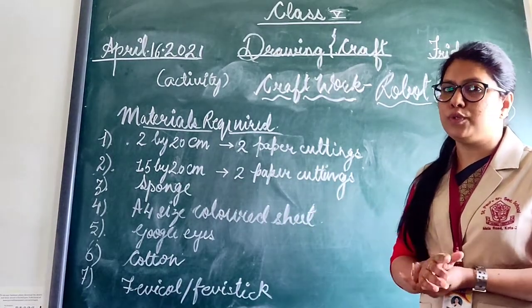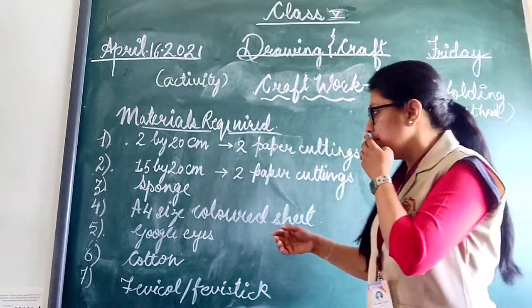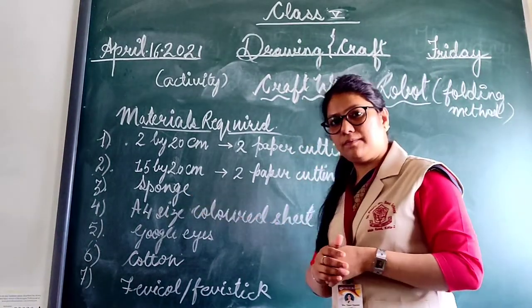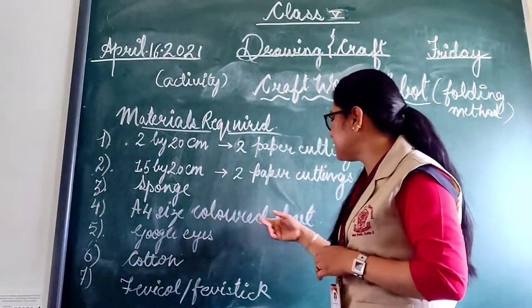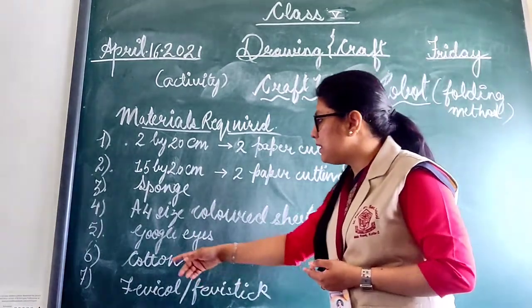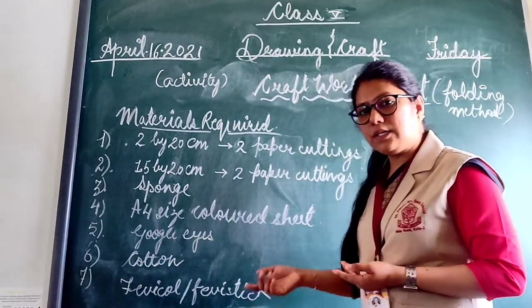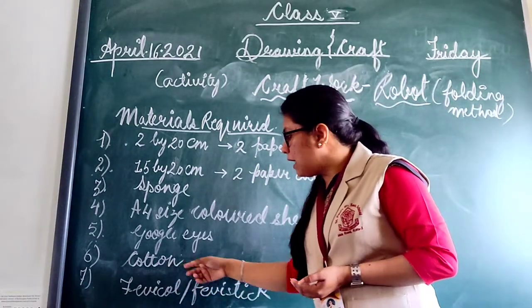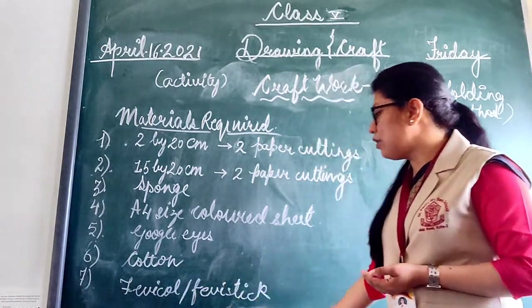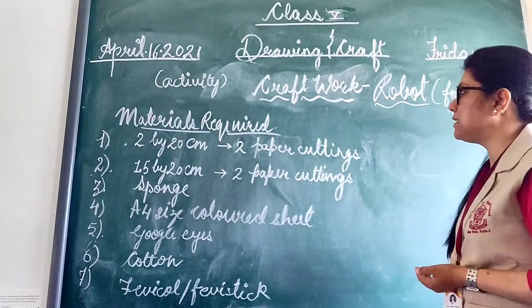You can use 2 different colors or 2 same colors also. And spot, just A4 size colored sheet with googly eyes for pasting, small googly eyes. And bottle, fevicol for pasting one.